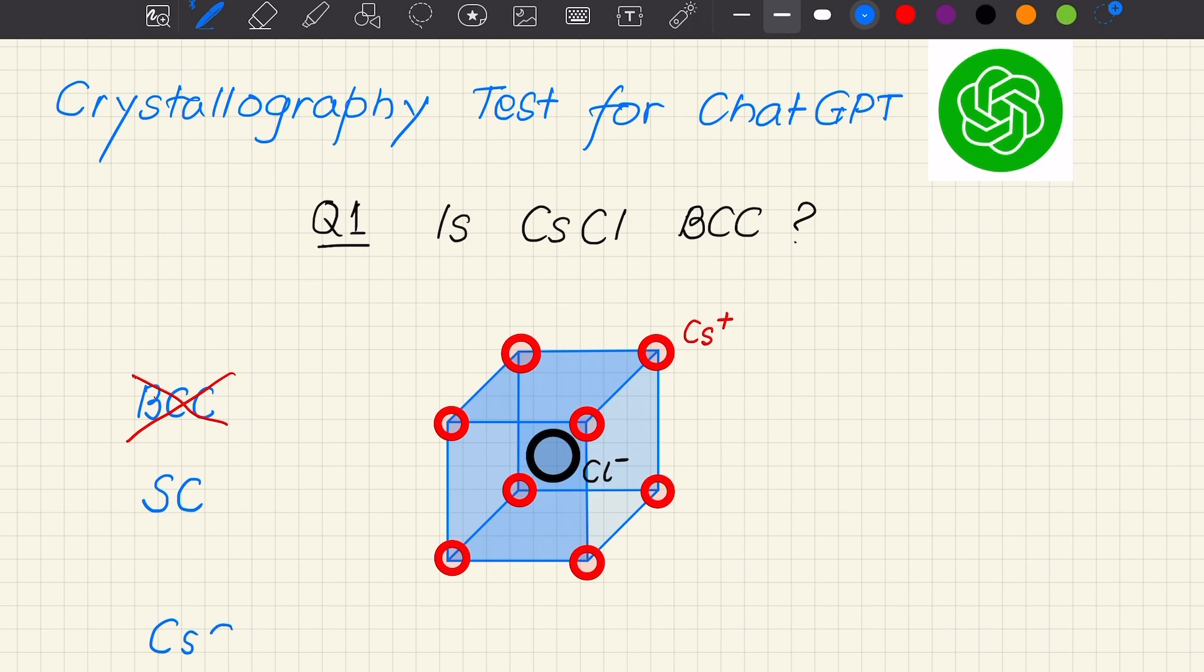The structure is cesium chloride. What we can write is that any crystal structure is a lattice plus motif. So the lattice is simple cubic, or we can say cubic primitive, plus a motif. In this case we have a two-atom motif with cesium ions at the corners, that is 000, and chloride ions at the body center, that is half half half.